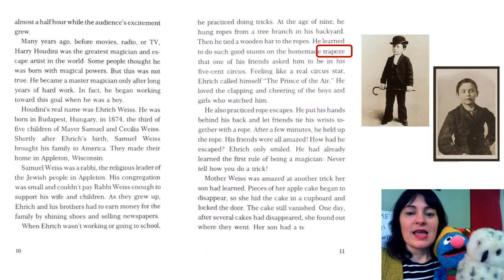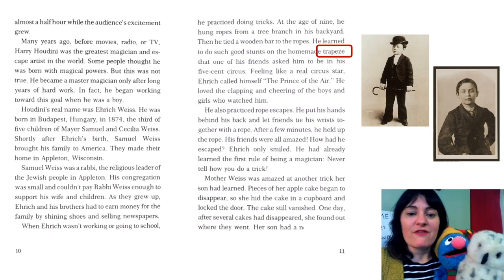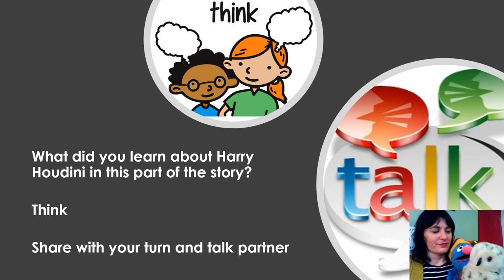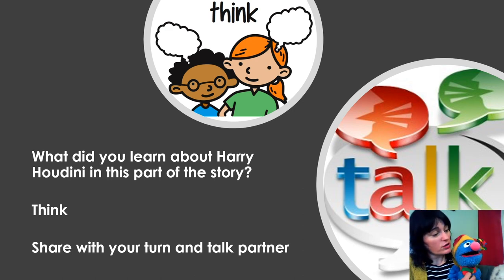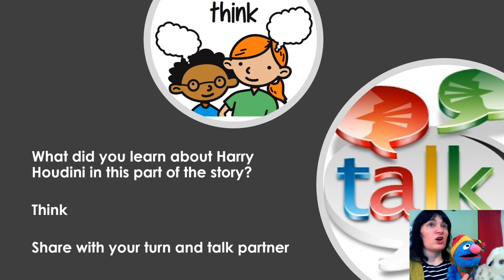He also practiced rope escapes. He put his hands behind his back and let his friends tie his wrists together with a rope. After a few minutes, he held up the rope — his friends were all amazed. How had he escaped? Enric only smiled. He had already learned the first rule of being a magician: never tell how you do a trick. So class, Grover and Hedwig — what do you think we learned about Harry Houdini in that part of the story? I think I learned that Harry Houdini started practicing a lot when he was younger, and he also liked the cheering of the boys and girls. That was important to him. He liked to perform.